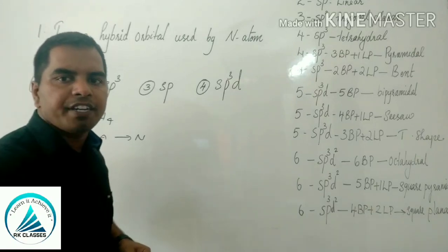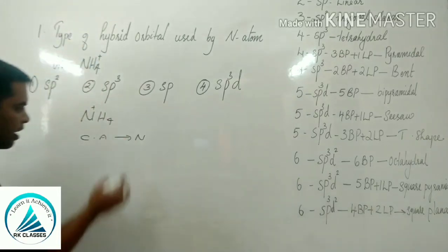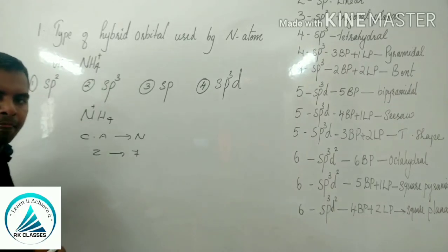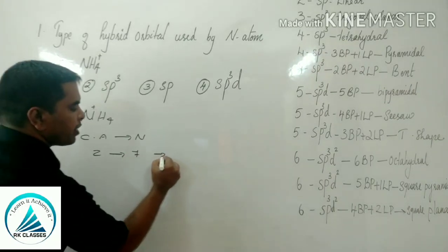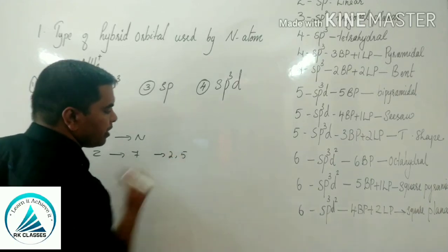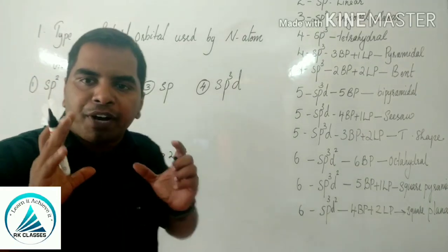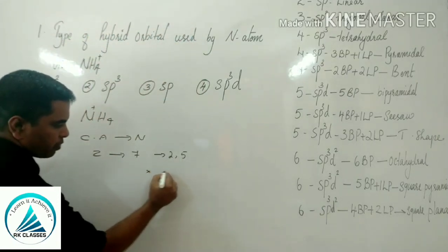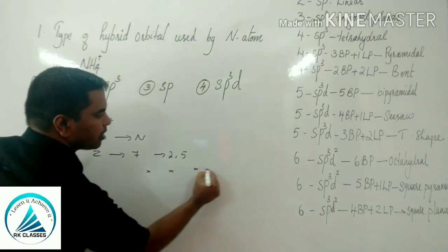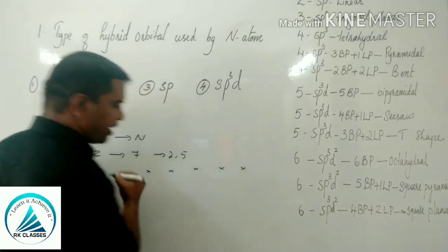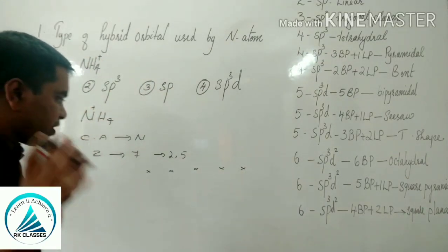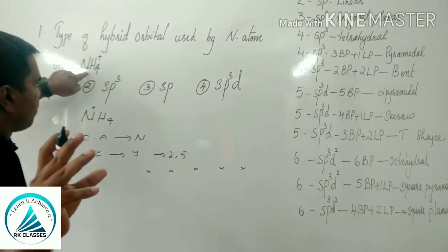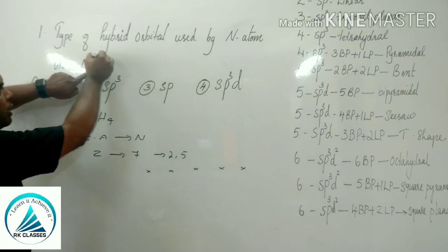The theory was already discussed in part 1. Central atom is nitrogen, atomic number 7, electronic configuration 2,5. There are 5 electrons in its valence shell. Among these 5 electrons, here there is one positive charge.